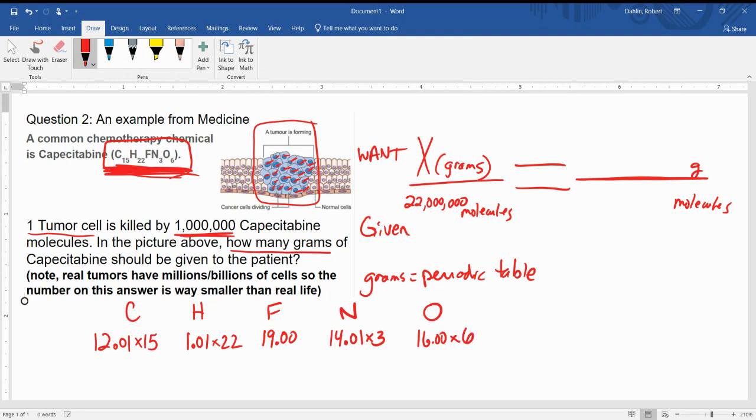Now you pull out your calculator. You're going to have a big question here. So 12.01 times 15, and this one might be easier to use parentheses around things. You've got to do all the multiplying first, remember for order of operations. Plus my fluorine, plus my nitrogen, plus my oxygen.